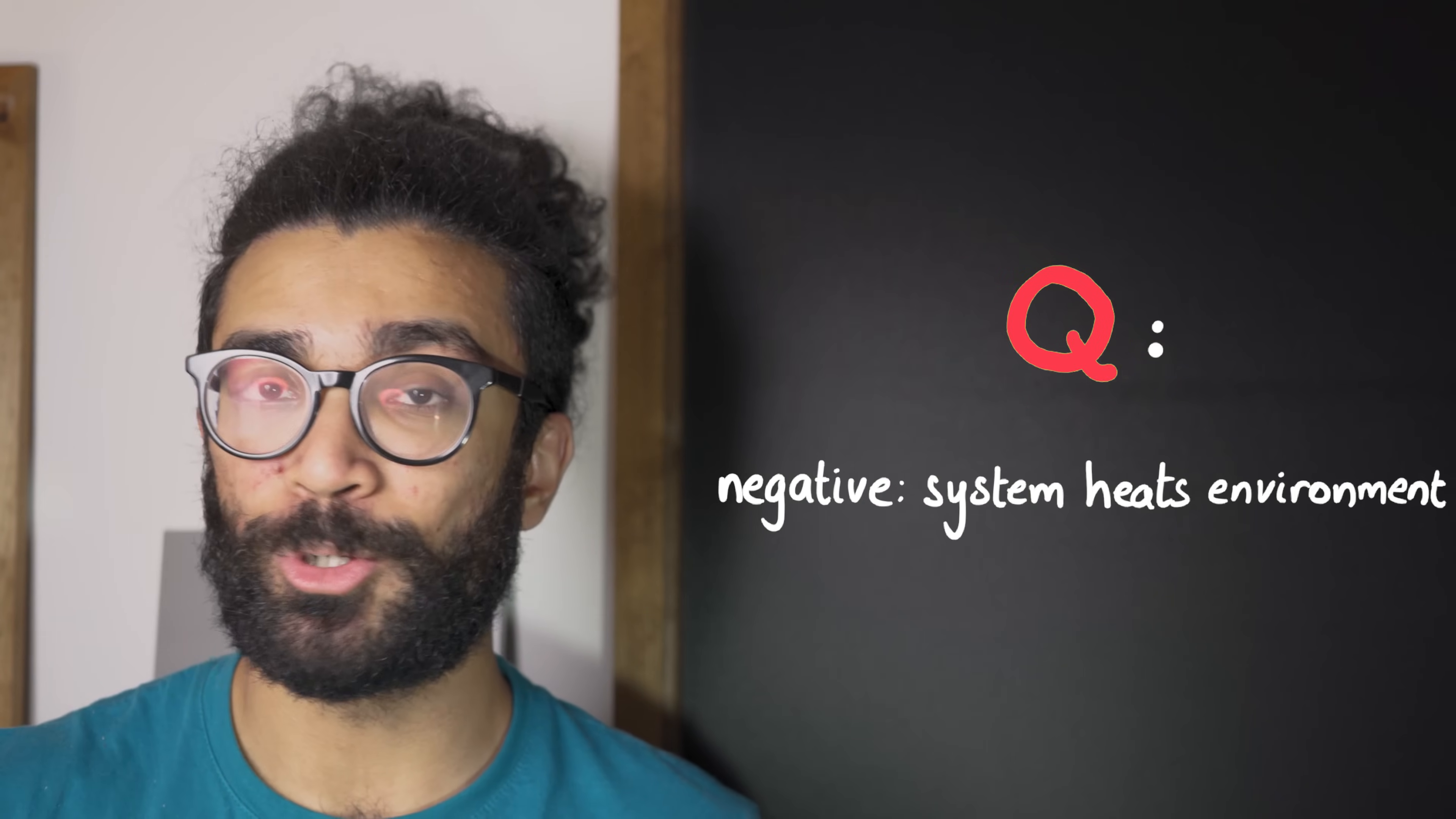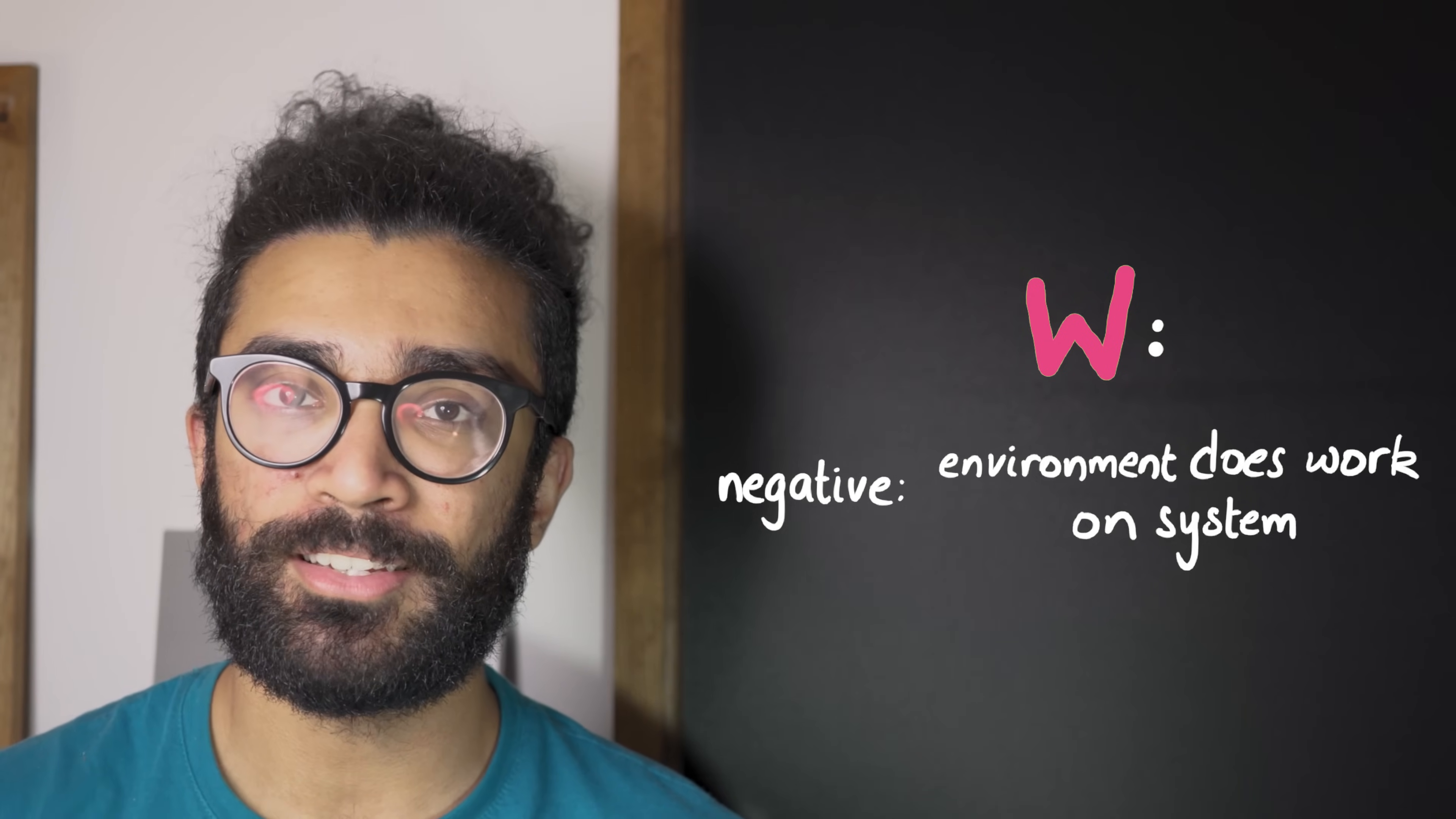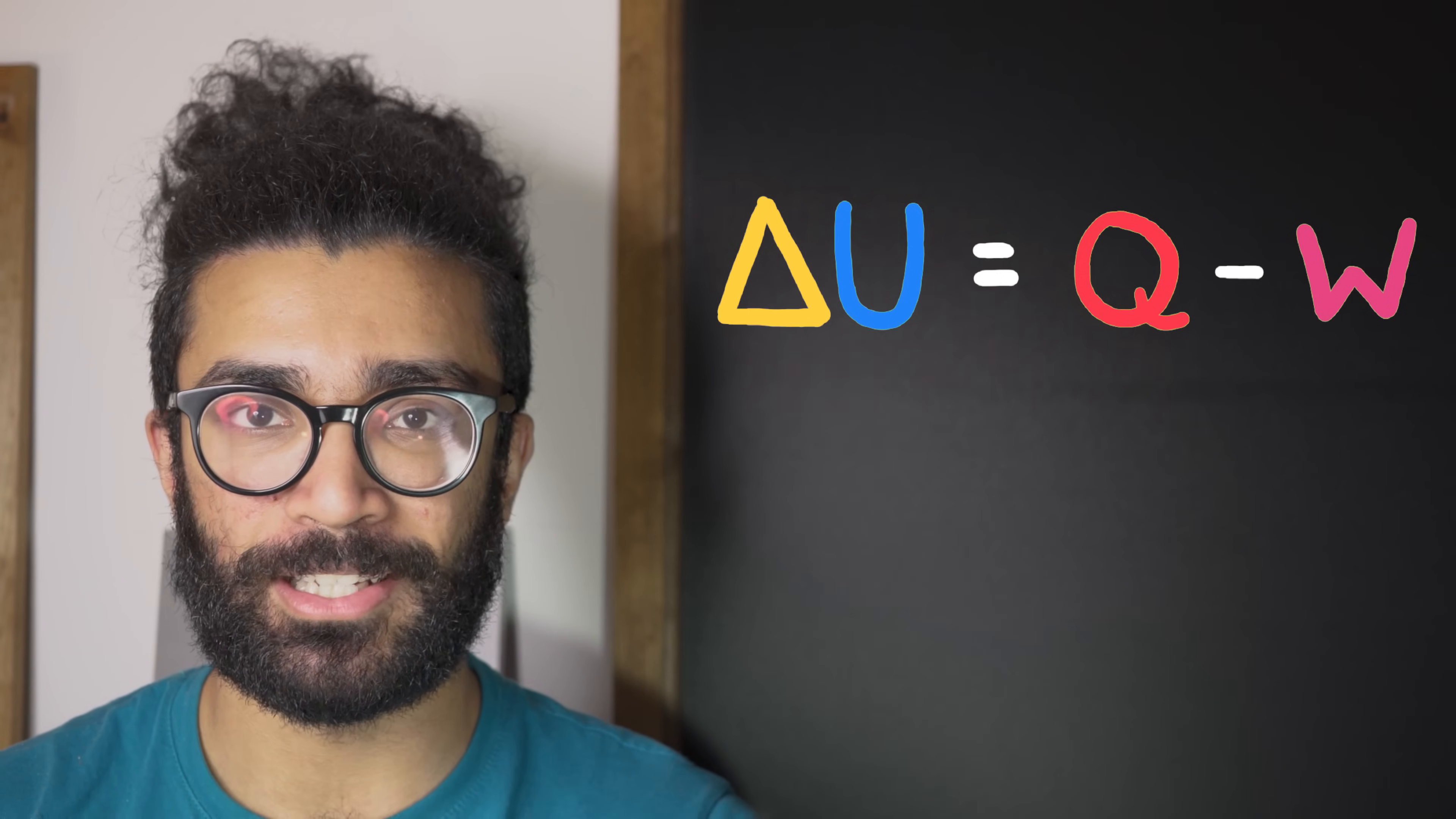because the value of Q could be negative, for example, if the system is heating its surroundings. And equally, if the surroundings of our system do work on it, then W could be negative as well. Makes sense, right? We do work on the system, we transfer energy to it, and its internal energy increases. And so the point is that our system cannot just magically gain or lose energy. Some form of energy must be transferred to it or from it in order for the internal energy to change.